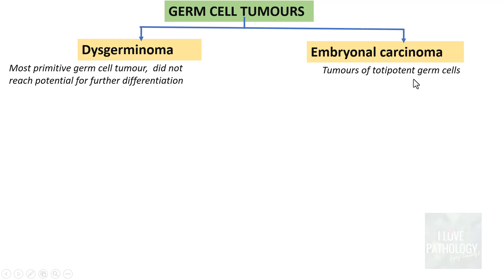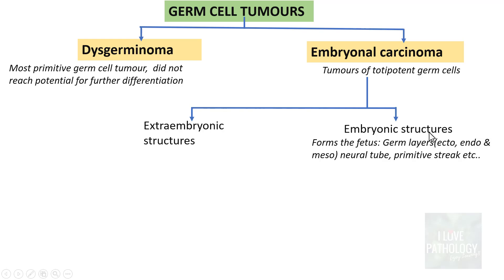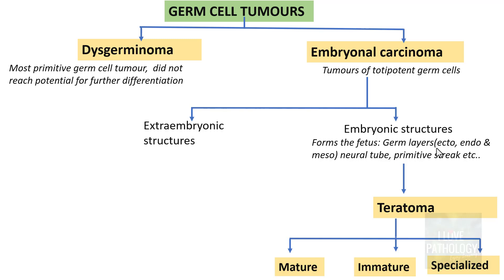Now if these totipotent germ cells differentiate further, they can differentiate along two lines: one is embryonic structures, and the other is extra-embryonic structures. Embryonic structures are those which form the fetus — ectoderm, endoderm, and mesoderm; neural tube, primitive streak, etc. The tumors arising from cells giving rise to embryonic structures are teratomas, which can be of different types: mature teratoma, immature teratoma, and specialized teratoma.